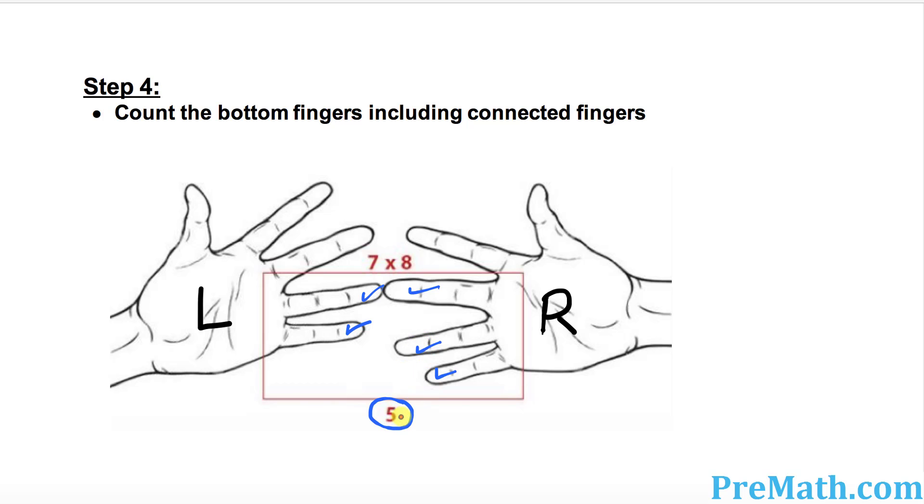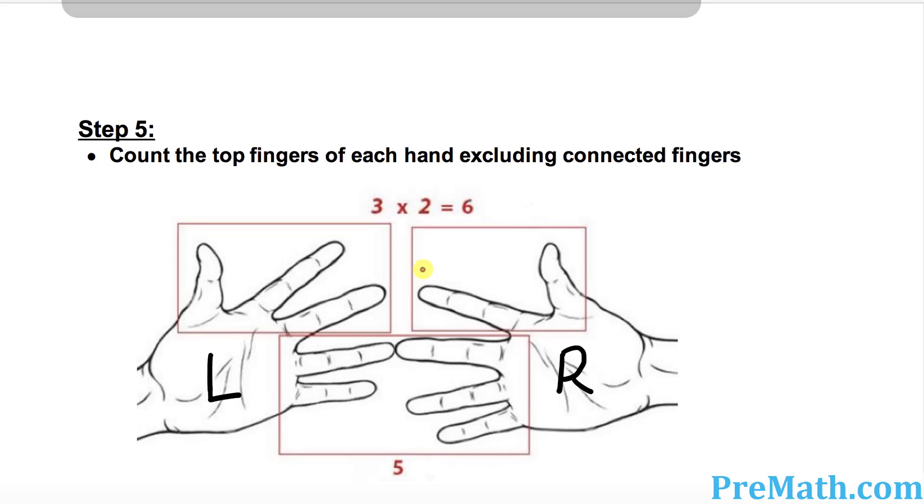Now, in the final step, I want you to count the top fingers of each hand. On the left hand, top fingers are 1, 2, and 3.